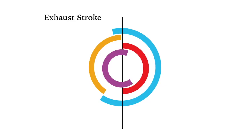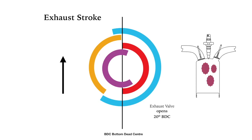Then the exhaust stroke. The exhaust valve opens just before the piston hits bottom dead centre. Then the piston rises, pushing out the exhaust gases. The exhaust valve opens about 20 degrees before bottom dead centre.